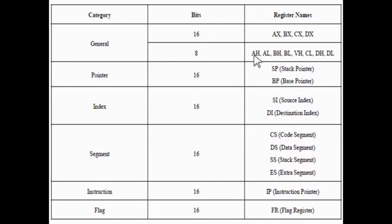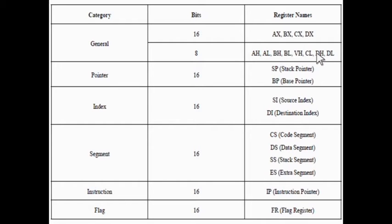The accumulator register is divided into accumulator high and accumulator low, each of 8 bits. The base address register is divided into base address high and base address low, each of 8 bits. The counter register is divided into counter register high and counter register low, each of 8 bits. The data register is divided into data register high and data register low, each of 8 bits.